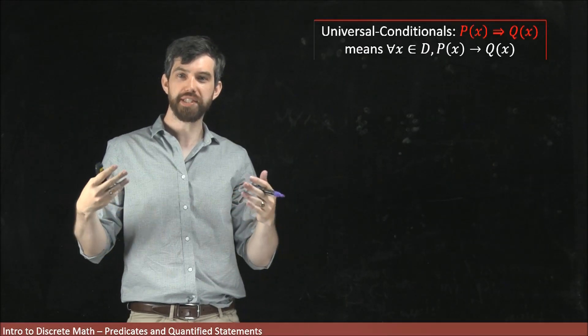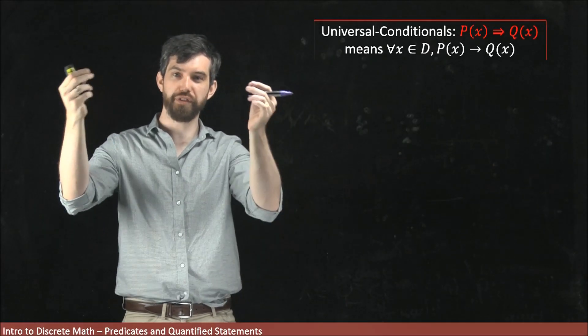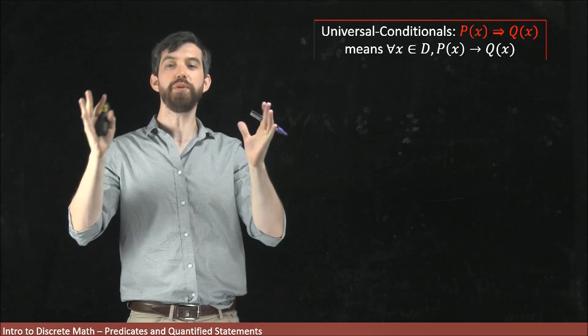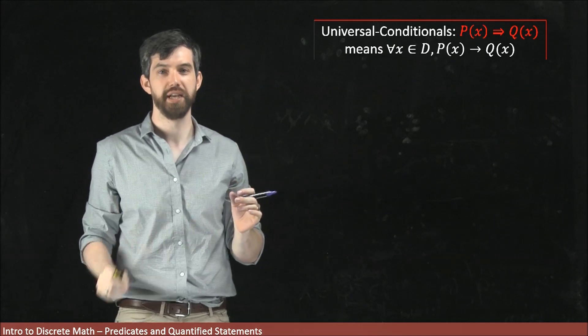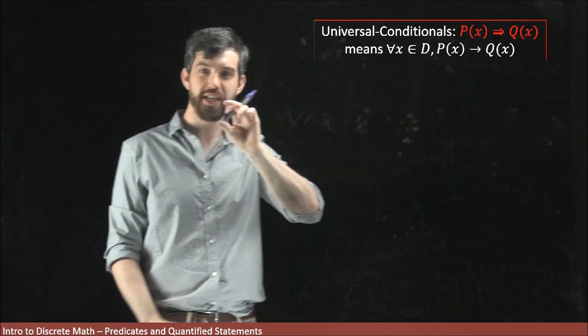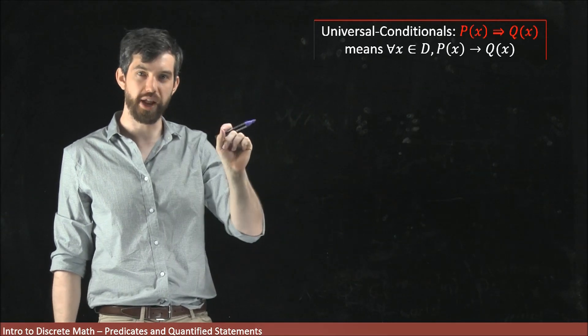I can do the same idea not just between two different statements but between two different predicates. That's what the idea of a universal conditional is. We use this notation P(x) and notice that it's a double arrow as opposed to a single arrow here.